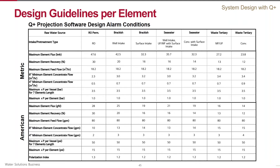While doing a system design, one should be cautious about individual elements not to exceed critical parameters such as maximum element flux, recovery, etc. This table summarizes LG design guidelines applicable for individual elements. Every time one or another parameter exceeds these recommendations, the software generates a warning. The goal of the designer is to come up with a system that does not have warnings.